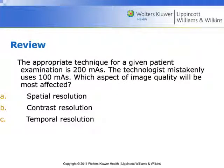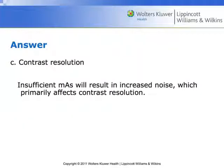Quick review: The appropriate technique for a given patient examination was 200 MAS. The technologist mistakenly used 100 MAS. Which aspect of image quality would be most affected — time, contrast, or spatial resolution? The answer is contrast resolution. Insufficient MAS will result in an increase in noise, which primarily affects contrast resolution.